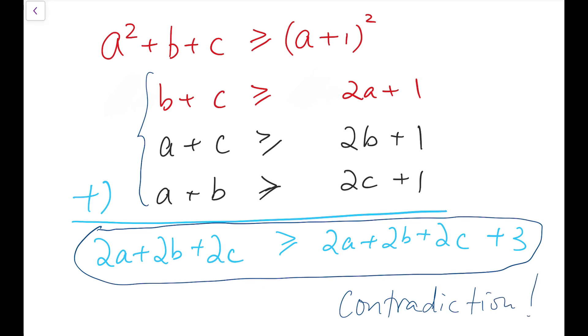We'll recall that this contradiction actually arises because we have made a wrong assumption, and our wrong assumption is that we have assumed that a square plus b plus c, b square plus a plus c, and c square plus a plus b are all perfect squares at the same time. So that means we must have the opposite statement, which is that they cannot be perfect squares at the same time. So we have proved the required statement.